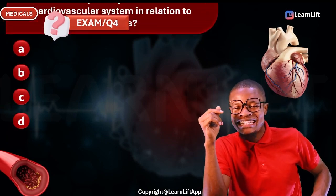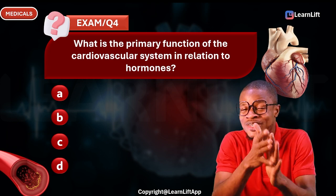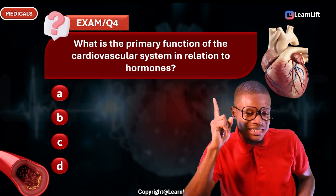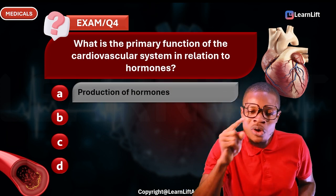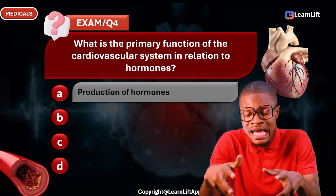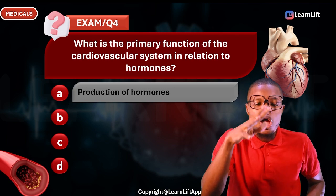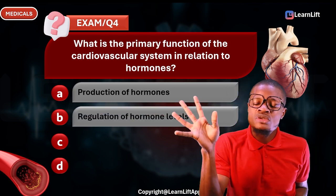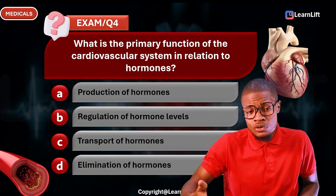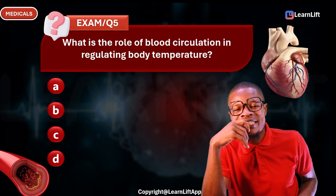Question four: What is the primary function of the cardiovascular system in relation to hormones? Hormones are chemical substances produced in one part of the body and transported to the point of action. They are produced in glands and transported by the cardiovascular system. Option A: production of hormones. Option B: regulation of hormonal levels. Option C: transport of hormones. Option D: elimination of hormones. The correct answer is Option C — transport of hormones.